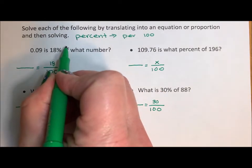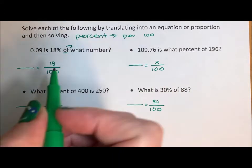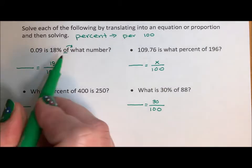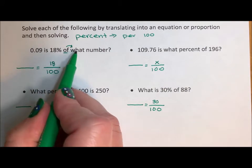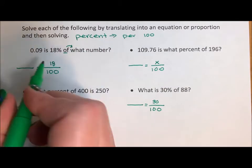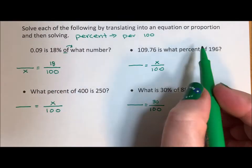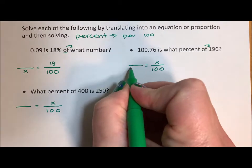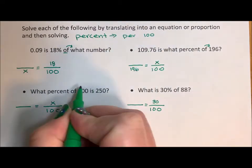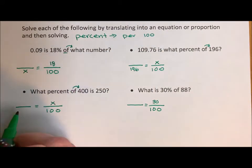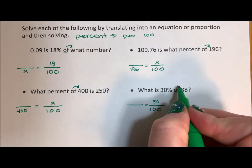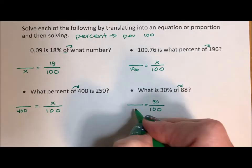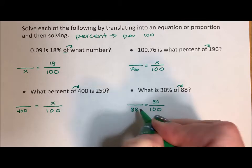Whatever comes directly after the word of is the other denominator. After the word of is the words what number, that's our X. What comes after the word of is 196. What comes after the word of is 400. What comes after the word of is 88. Those are my denominators.